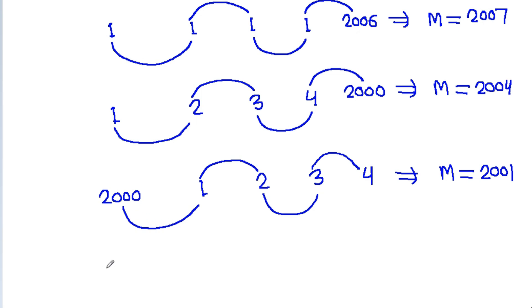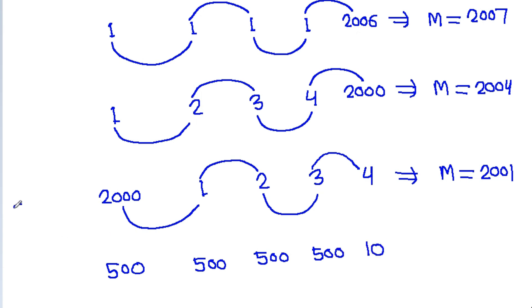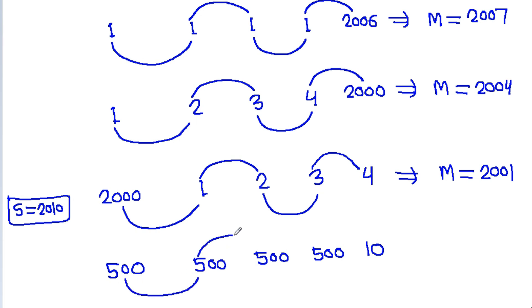Suppose a is 500, b is 500, c is 500, d is 500, then e will be 10, because the sum is equal to 2010. In this case, a plus b is 1000, b plus c is 1000, c plus d is 1000, and d plus e is 510. So m will be equal to 1000.